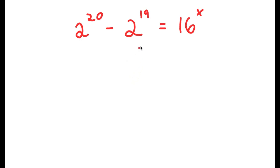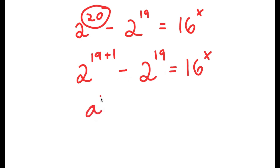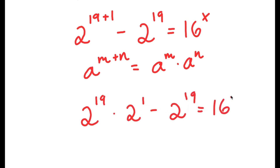In this problem I have 2 to the power of 20 minus 2 to the power of 19 is equal to 16 to the power of x. I'm going to first start by rewriting 20 as 19 plus 1, so now I have 2 to the power of 19 plus 1 minus 2 to the power of 19 is equal to 16 to the power of x. Since a to the power of m plus n equals a to the power of m times a to the power of n, I get 2 to the power of 19 times 2 to the power of 1, minus 2 to the power of 19, equals 16 to the power of x.